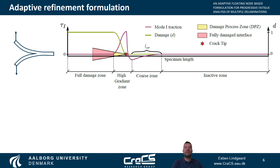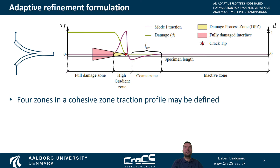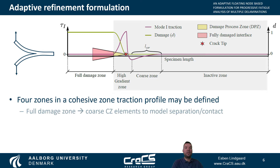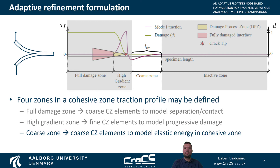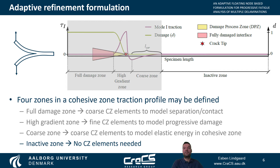The formulation is based on observations done on typical cohesive traction and damage profiles, here shown for a mode 1 interface example. From these observations, we may define four zones together with the associated mesh requirements. We have the full damage zone that has a fully damaged interface and only needs coarse cohesive elements to model separation and simple contact. We have the high gradient traction zone that includes the damage process zone and requires fine cohesive elements to accurately model progressive damage. Then we have the coarse zone, defined as the small traction zone ahead of the damage process zone, modeled by coarse cohesive elements to capture the elastic energy. And finally, the inactive zone, which is far away from the damage process zone and does not need to be modeled by cohesive elements.